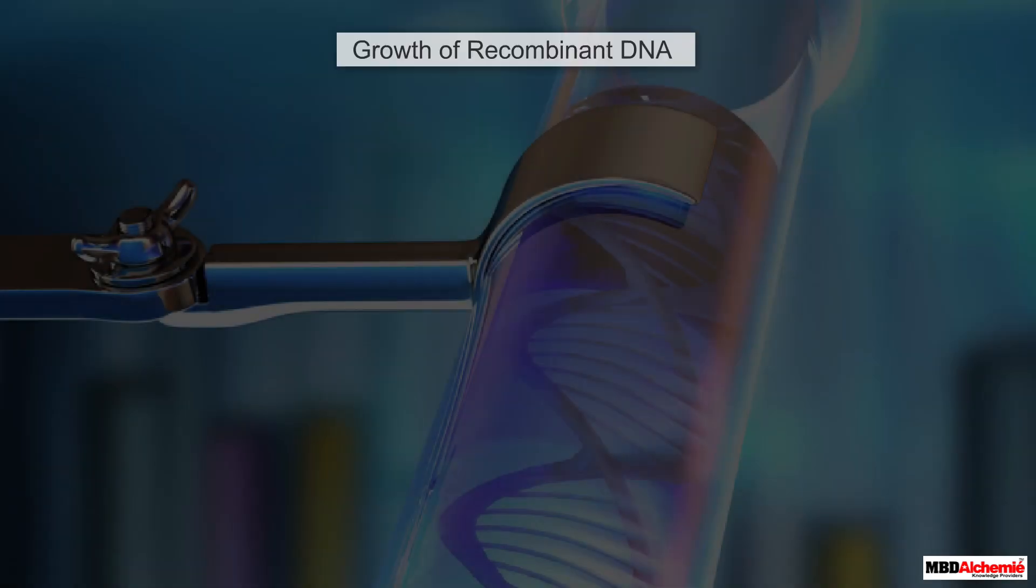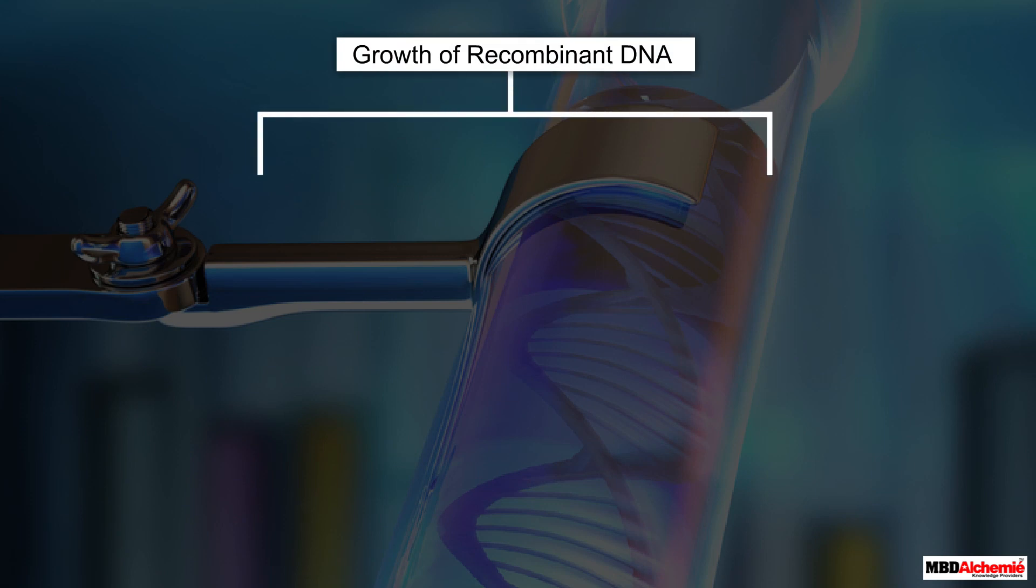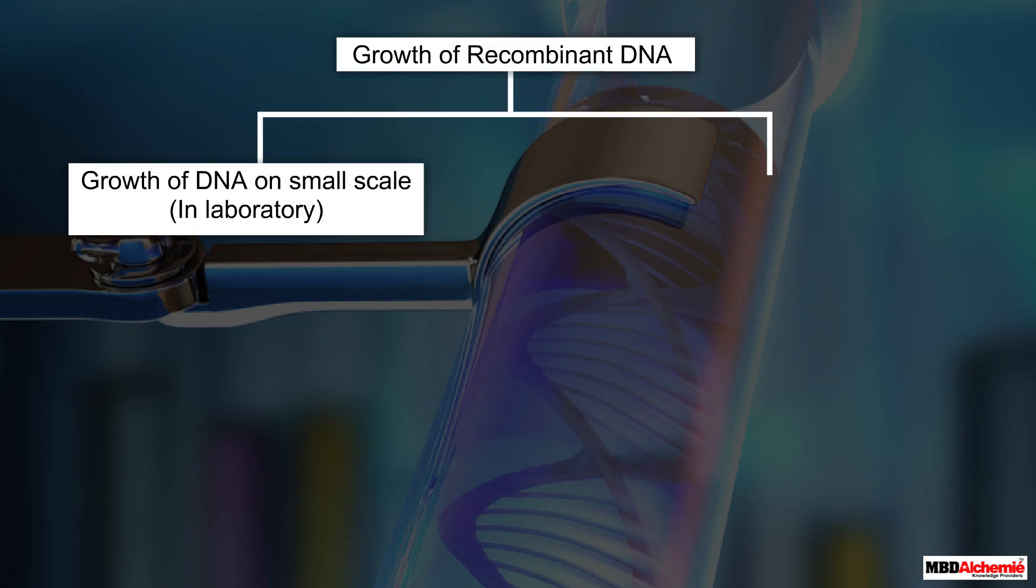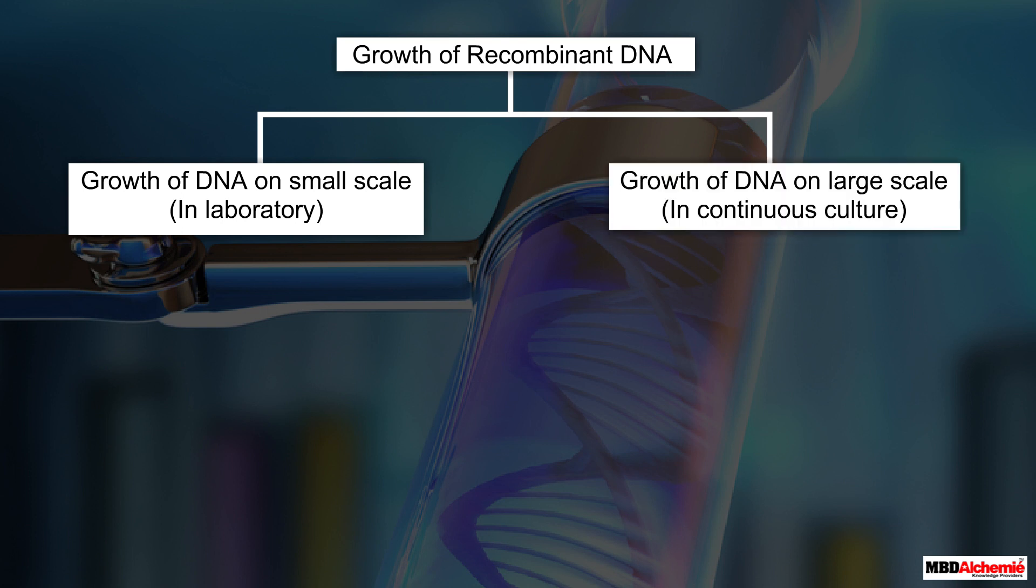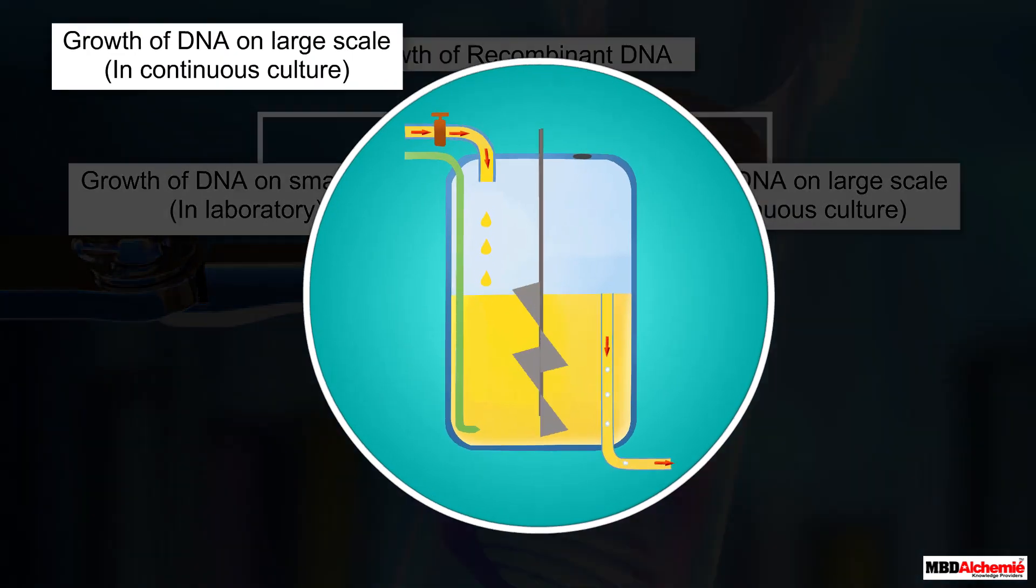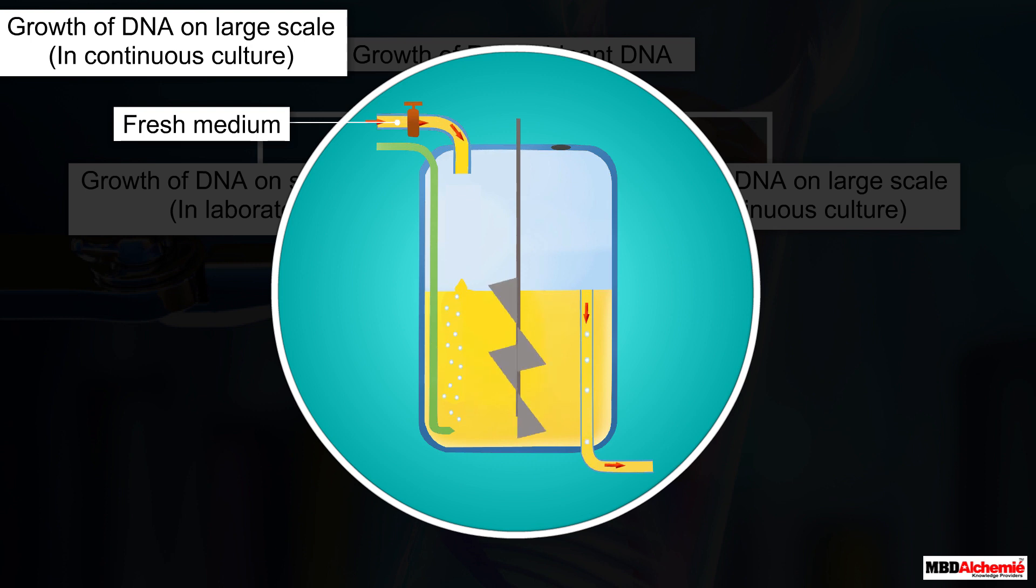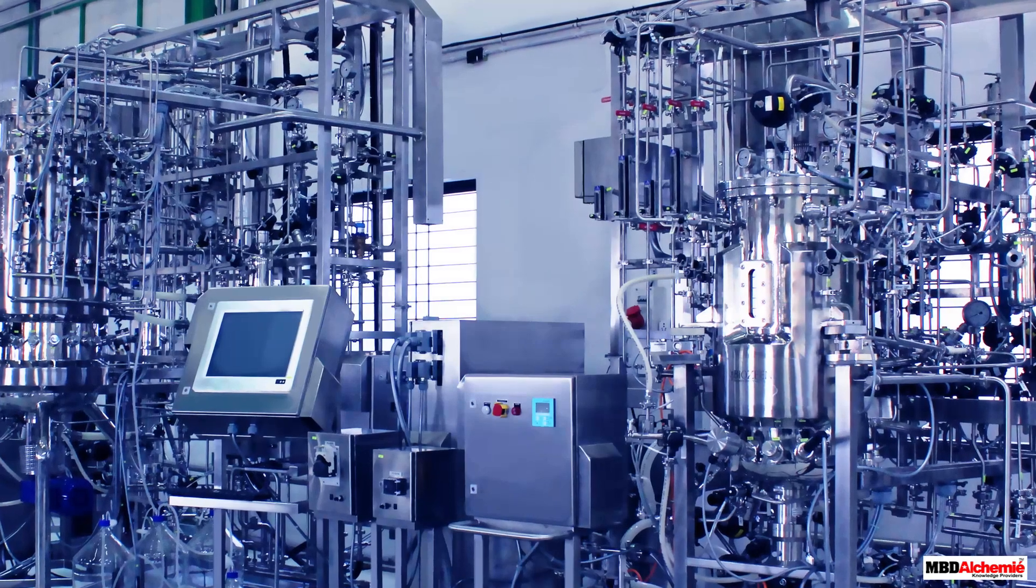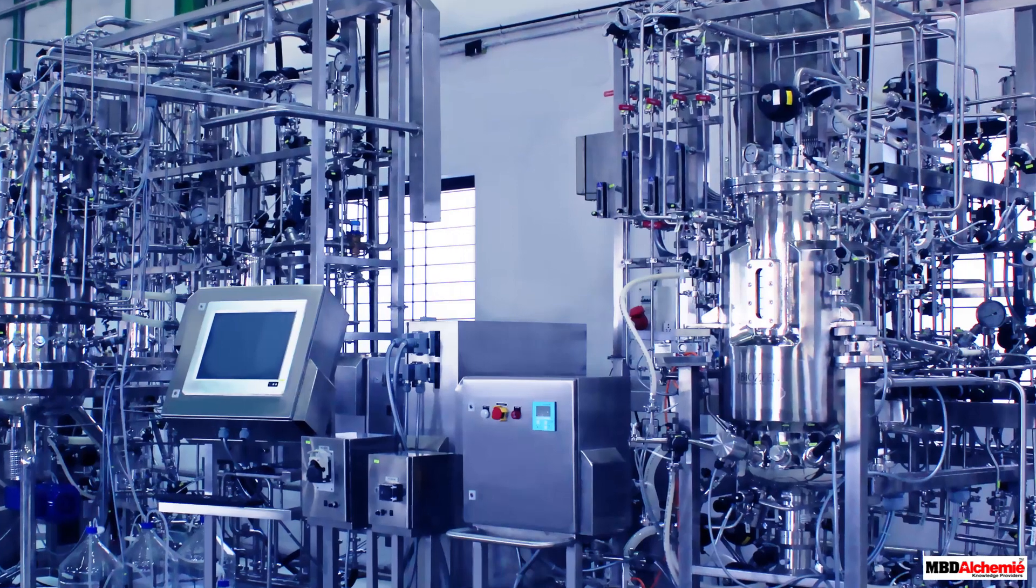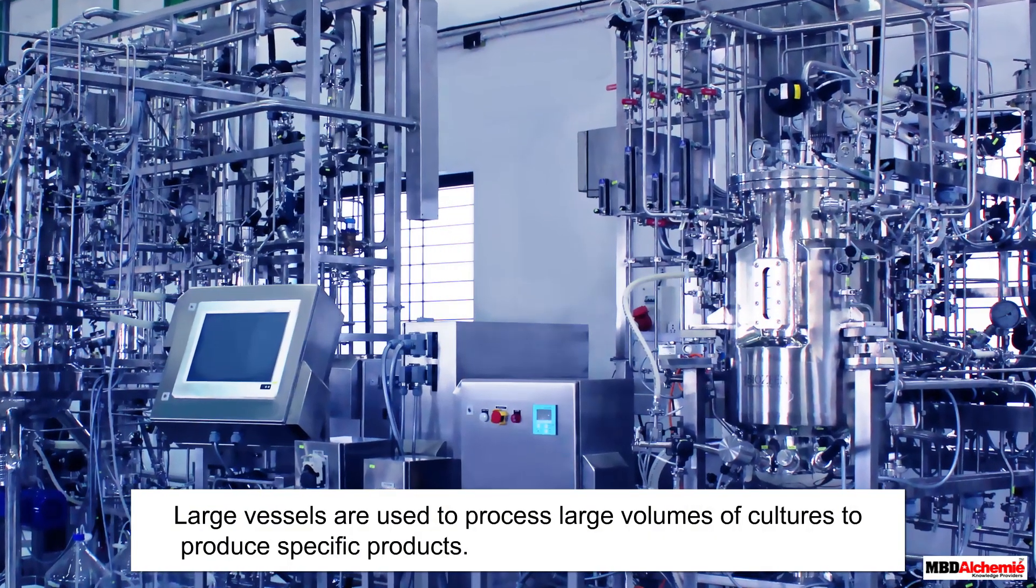The cells with recombinant DNA can either be grown on a small scale in a laboratory or can be multiplied on a large scale in a continuous culture. In this case, used medium is drained from one side and fresh medium is added from the other side continuously. To produce large quantities of desired cells, large vessels are used.